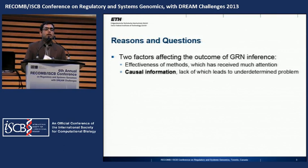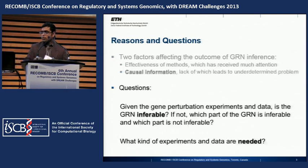In this talk we'll focus on the underdetermined issue. The accuracy of an inferred network depends not only on the effectiveness of the method, but also on the availability of causal information in the data. If we do not have sufficient causal information, the problem will be underdetermined. We can ask: are the gene regulatory networks inferrable? If not, which part is inferrable, and what kind of data and experiments do we need?